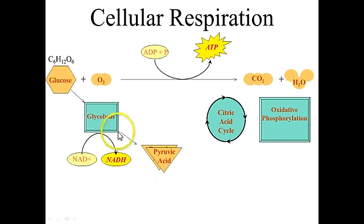Pyruvic acid is the result of glycolysis. Pyruvic acid is brought into the mitochondria or mitochondrion, and it enters a process called the citric acid cycle.